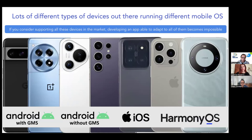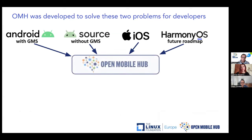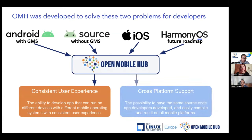Looking at all the device types out there, developing an app that runs on all of them — regardless of whether it's Android with GMS, Android without GMS, Apple iOS, or Huawei Harmony OS — is very difficult with many challenges. That's why we created Open Mobile Hub, this open source project under Linux Foundation Europe, to solve these two particular problems: consistent user experience and cross-platform support.